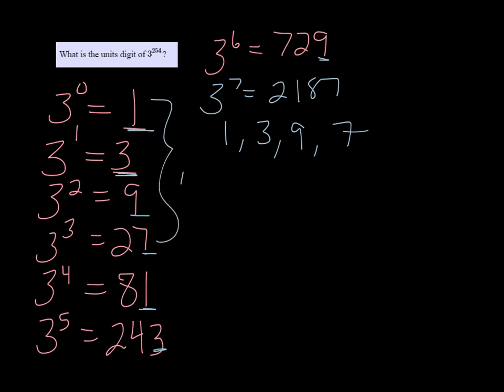So that means it's repeating every 4th time. So if we take our power 254 and do long division by 4, what we're interested in is the remainder, because the remainder is going to tell us which power it matches up with.